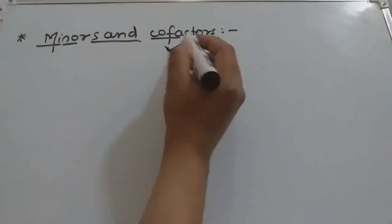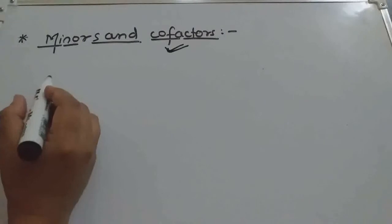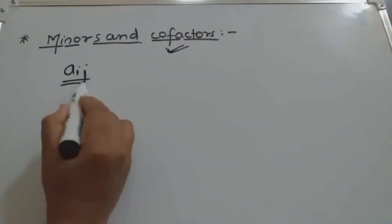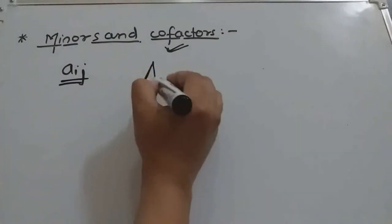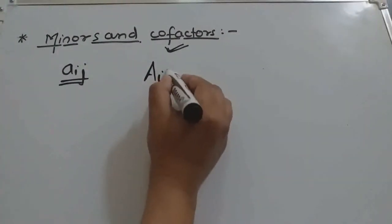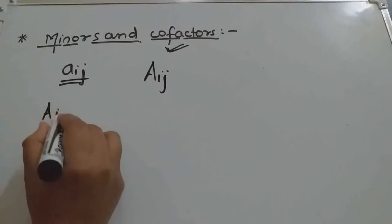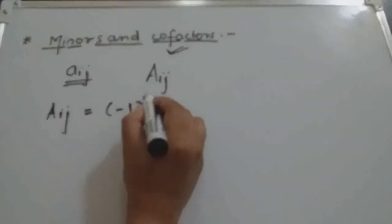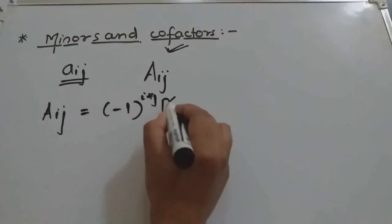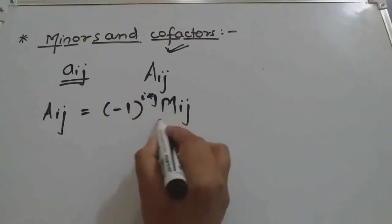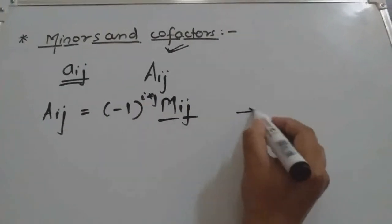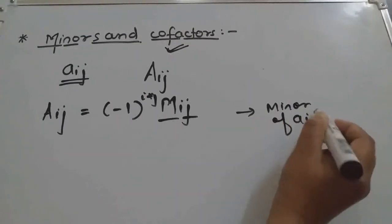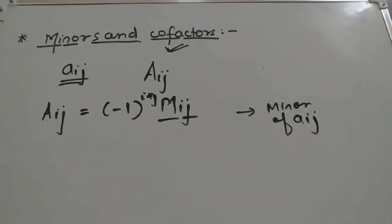Now, cofactor — what is the cofactor? The cofactor of any element aij in a determinant is denoted by capital Aij, and it is defined as: Aij = (-1)^(i+j) × Mij, where Mij is the minor of aij. So this is the cofactor.